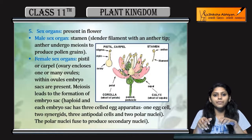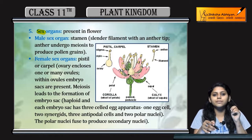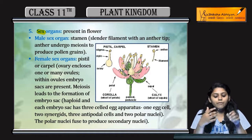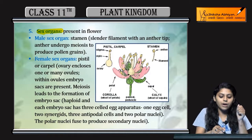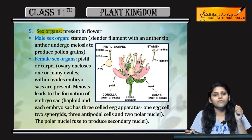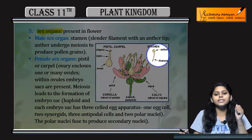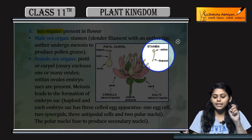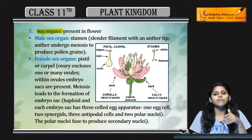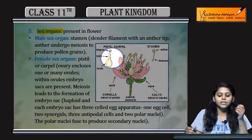Here we will study the sex organs which are present in flowers. Angiosperms are flowering plants — where flowers are present, there will be male sex organs and female sex organs. Male sex organs are the stamen, which consist of the anther and filament.